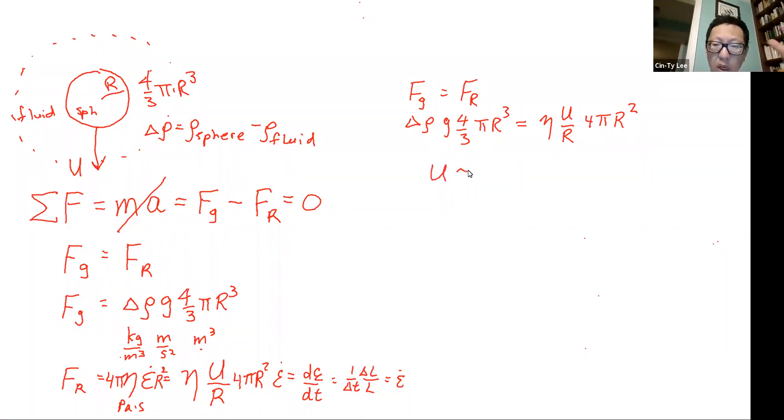that the sinking velocity of this sphere, that is denser than the fluid, is going to scale along this rho g r squared over eta multiplied by some constant, one third. Now it turns out, if you were to solve this explicitly, instead of approximating like what I just did here, instead of the one third, you would have a two ninths. Two ninths would be what you really have. But that's close enough to one third.